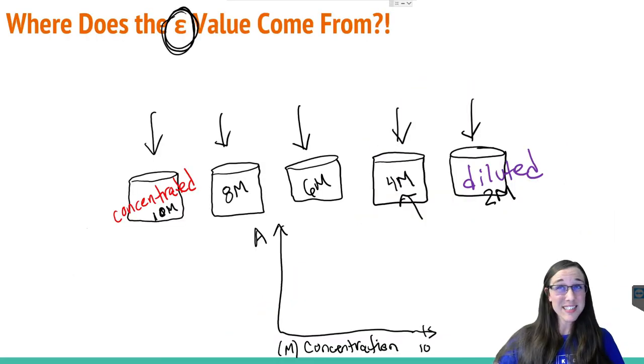Now I could clearly see that my 10 molar sample would probably have the highest absorption, then the 8 molar slightly less, the 6 molar slightly less, the 4 molar slightly less, and the 2 molar slightly less. That'll give me a convenient little line on a graph.